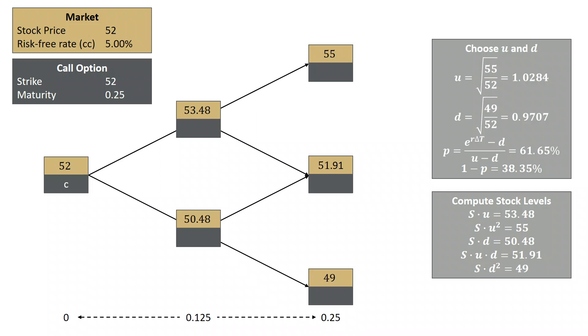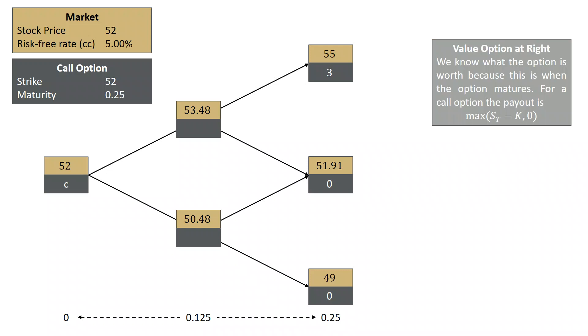Now the strategy for valuing an option on a two-step binomial tree is as follows. We know the last slice, the far right, is where the option expires, and we know how to value the option here. So the value of the option on the far right side of our tree is going to be the maximum of ST, the terminal stock price, minus the strike, and 0.